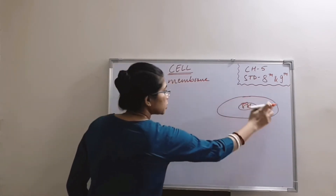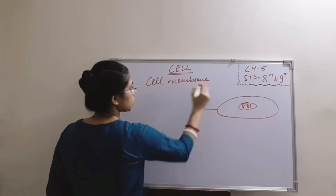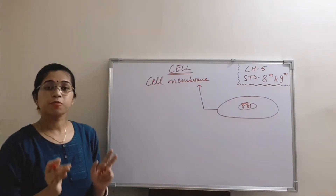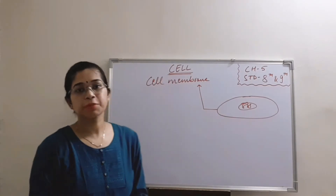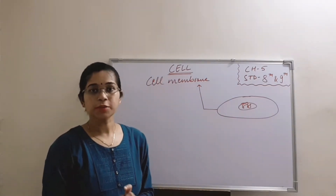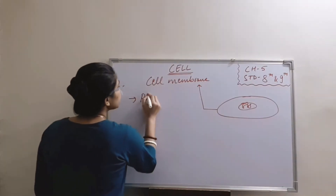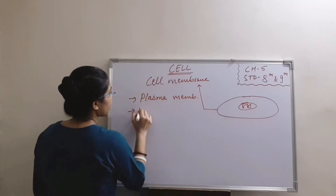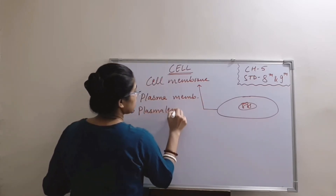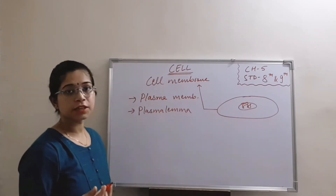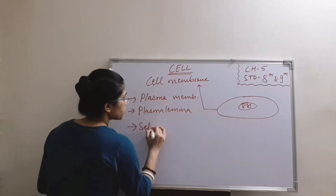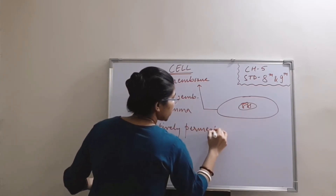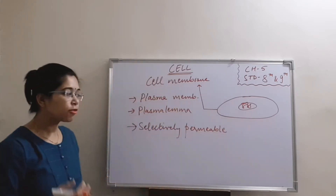The next component is cell membrane. This outer covering is known as cell membrane. As the name indicates, it is a membrane forming a layer outside the cell. It is protective in nature and also helps in keeping the cell in an intact position or in proper shape. The other names of cell membrane are plasma membrane and plasmalemma. This cell membrane is selectively permeable in nature, meaning it allows only the useful components to enter into the cell and doesn't allow any harmful component to enter.